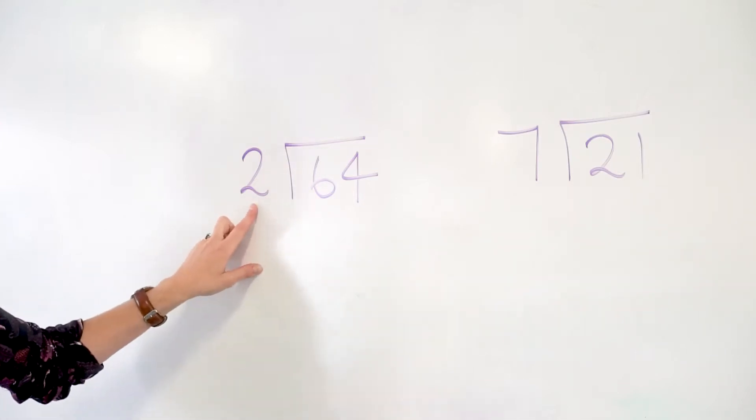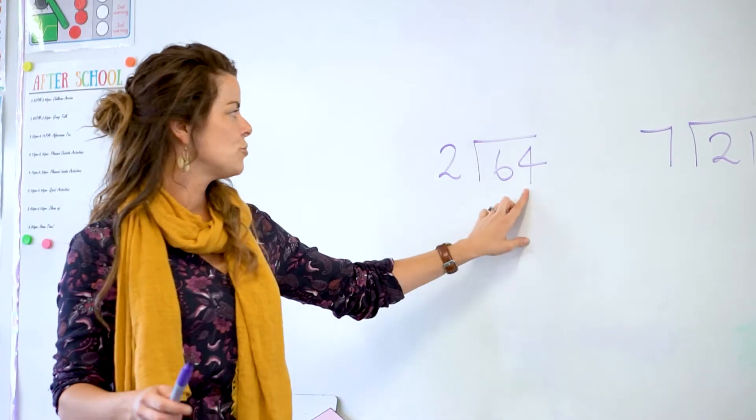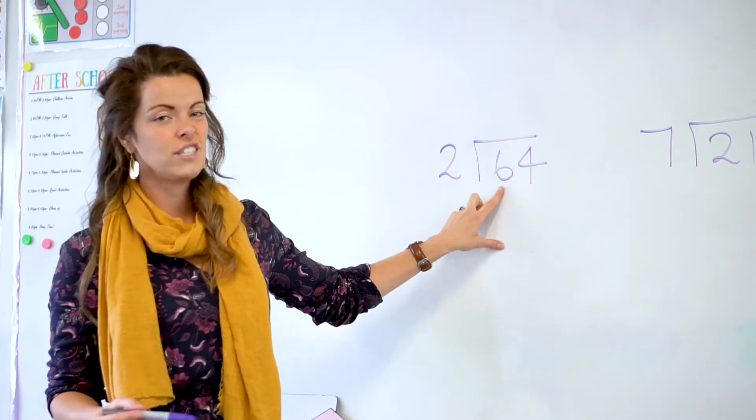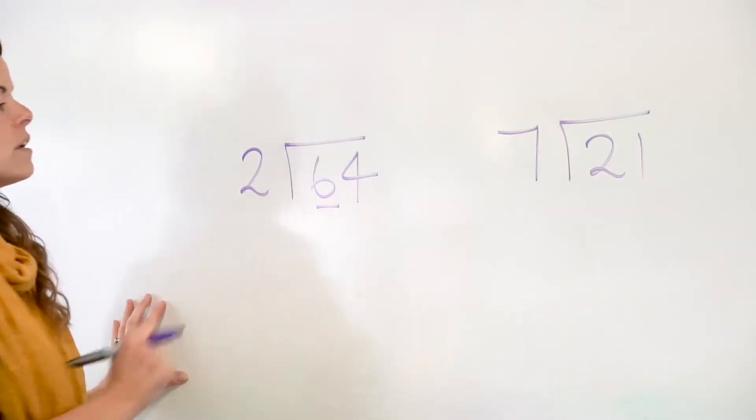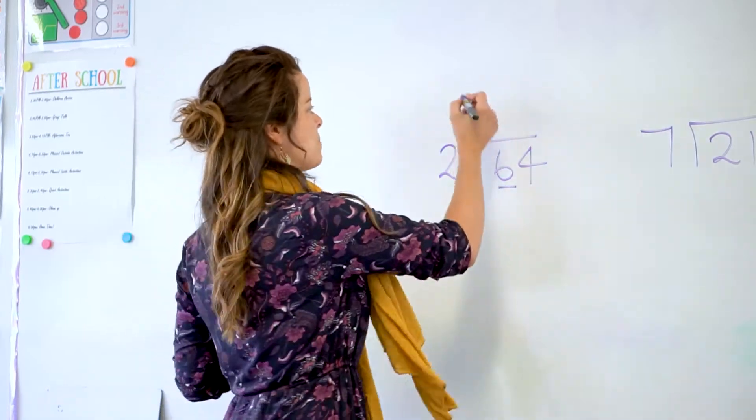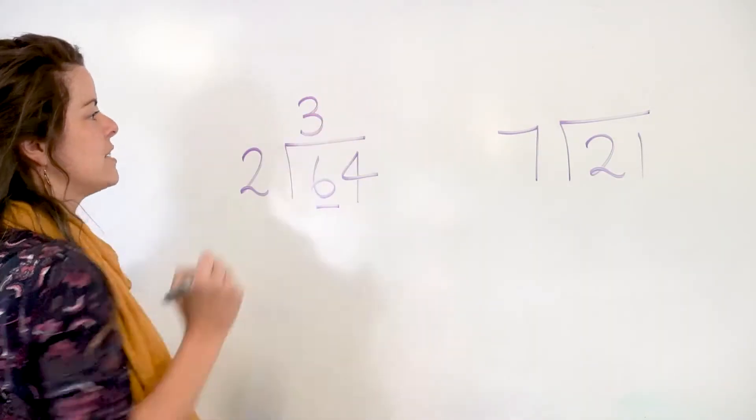So the first question we ask is, instead of looking at how many times does 2 go into 64, we actually go to the first digit here. How many times does 2 go into 6? We can write that would be 3 times.